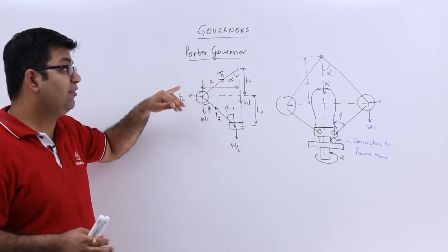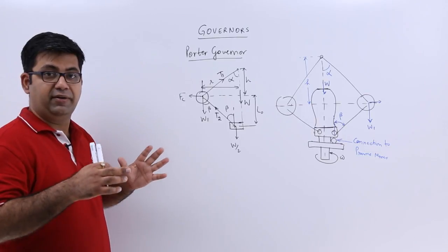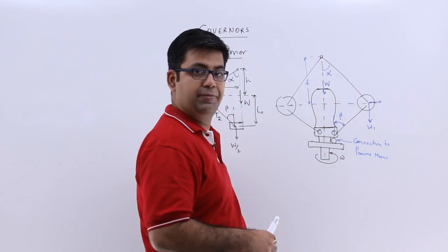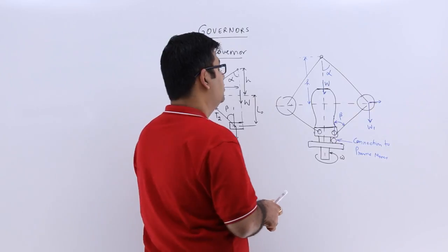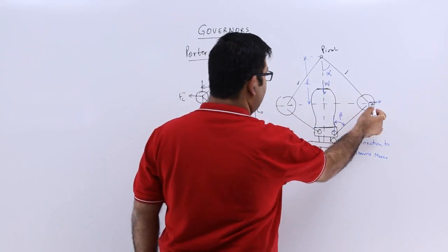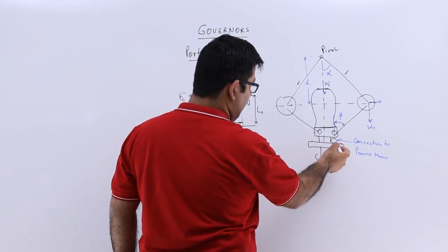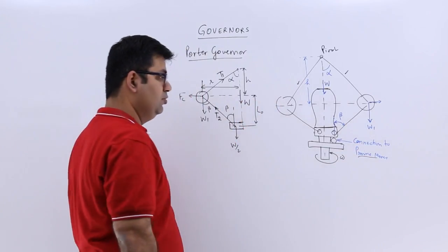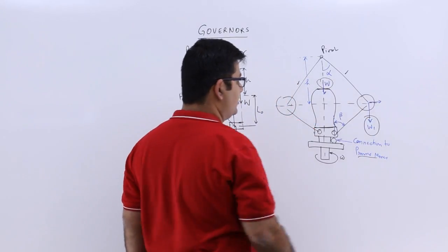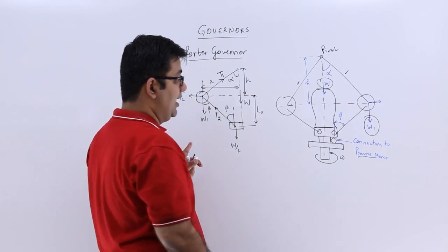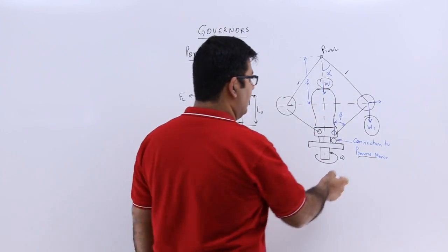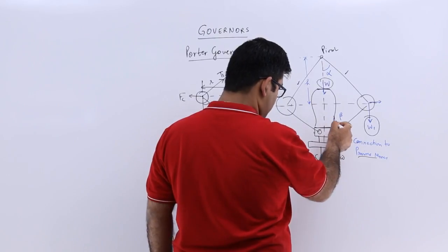After the centrifugal governor, we will look at the first deadweight type governor, which is the Porter governor. In this, you have a fixed weight at the center of it. You have the pivot at the top, these are your arms, your fly balls, the sleeve and the link — this is the connection to the prime mover and this is connected to the shaft of the engine. The weight of the balls is W1 and the weight at the center is W. The angle between the top arms and the axis is alpha, and the angle between the bottom arms and the axis of the point of the sleeve is beta.